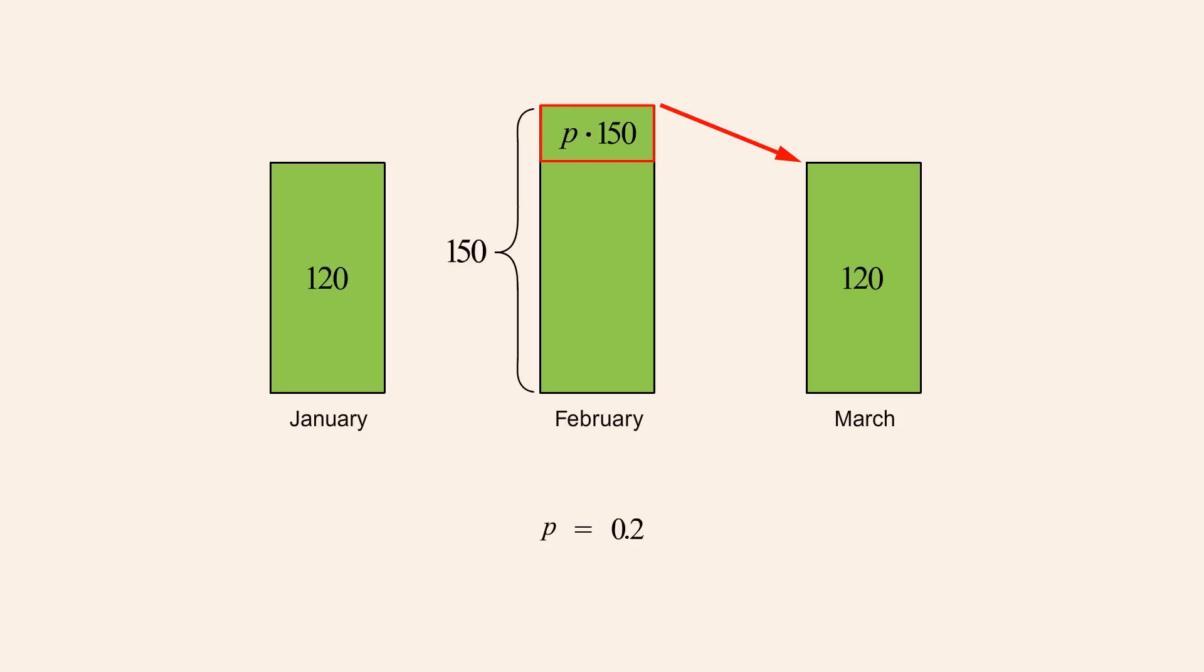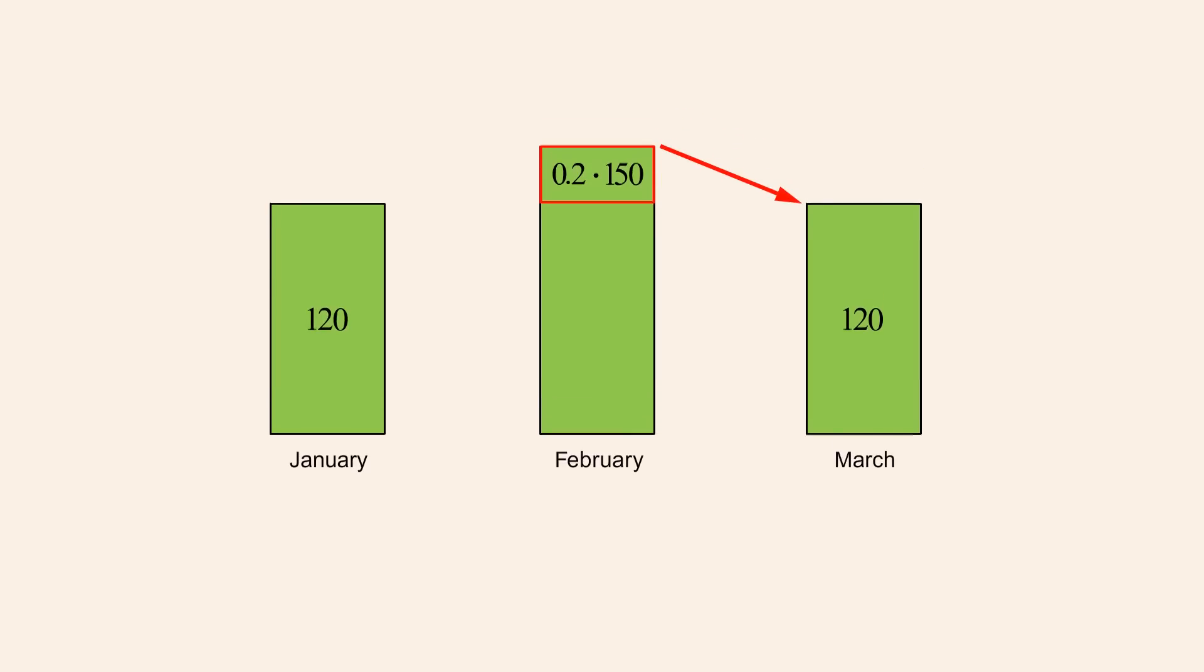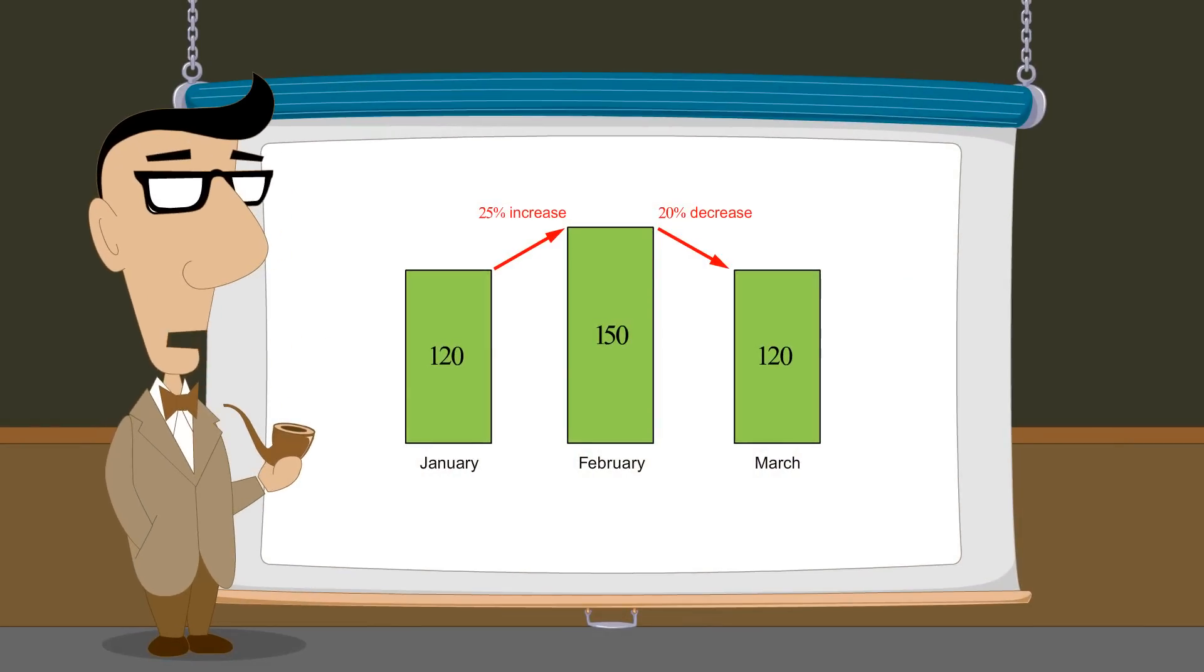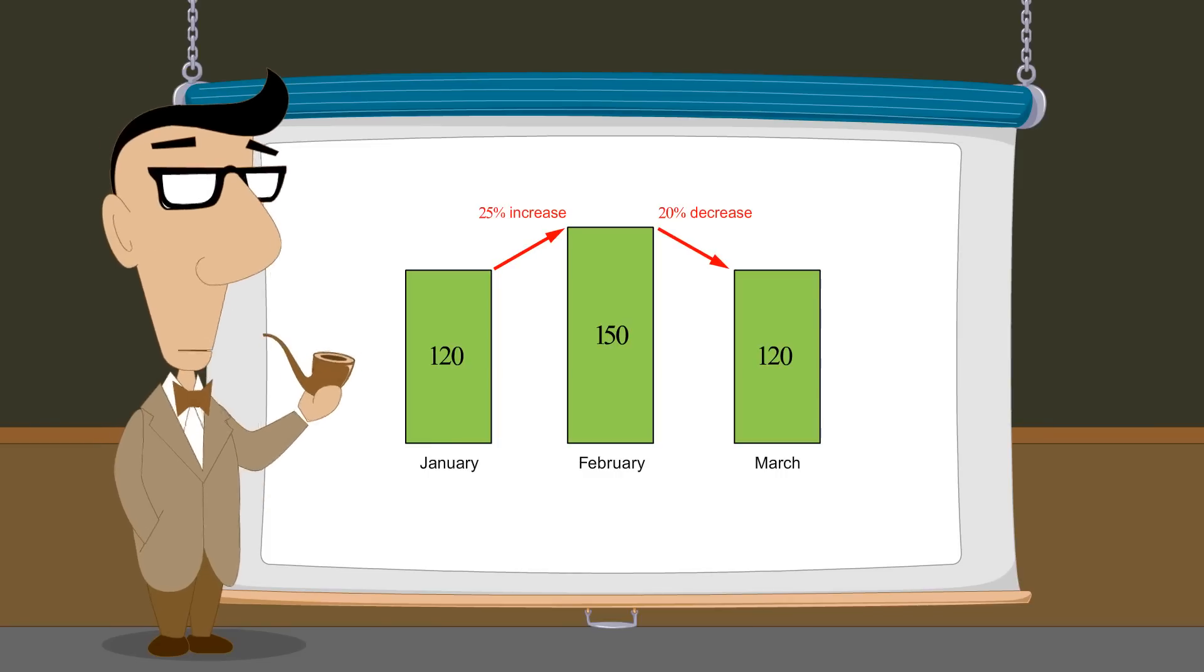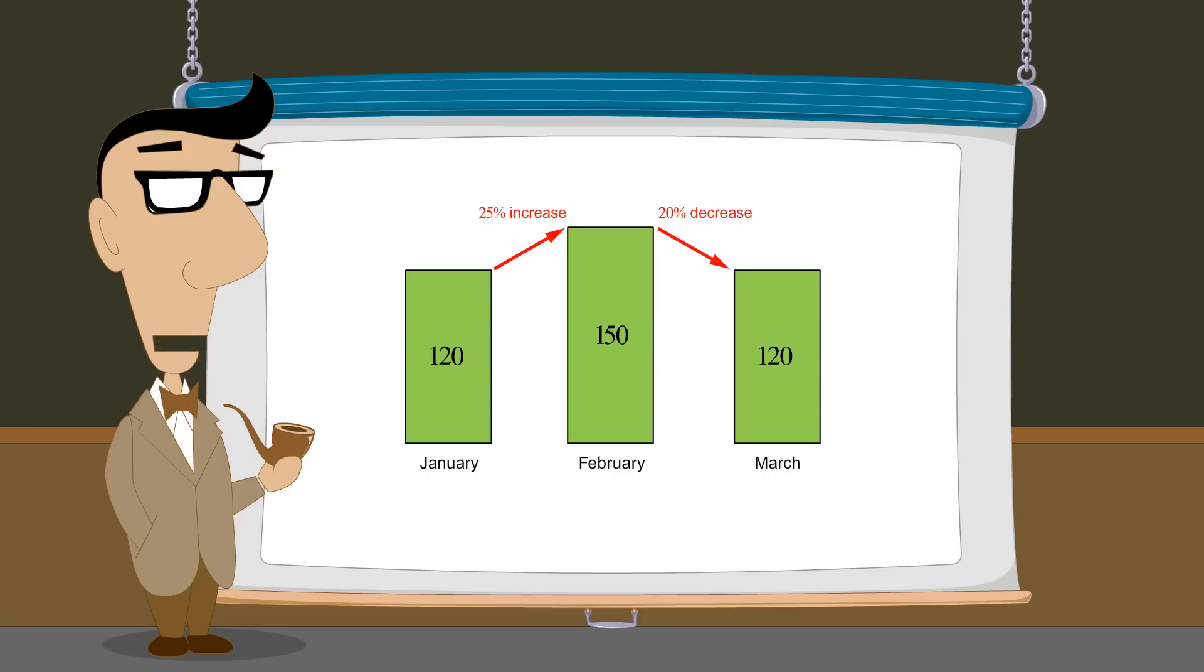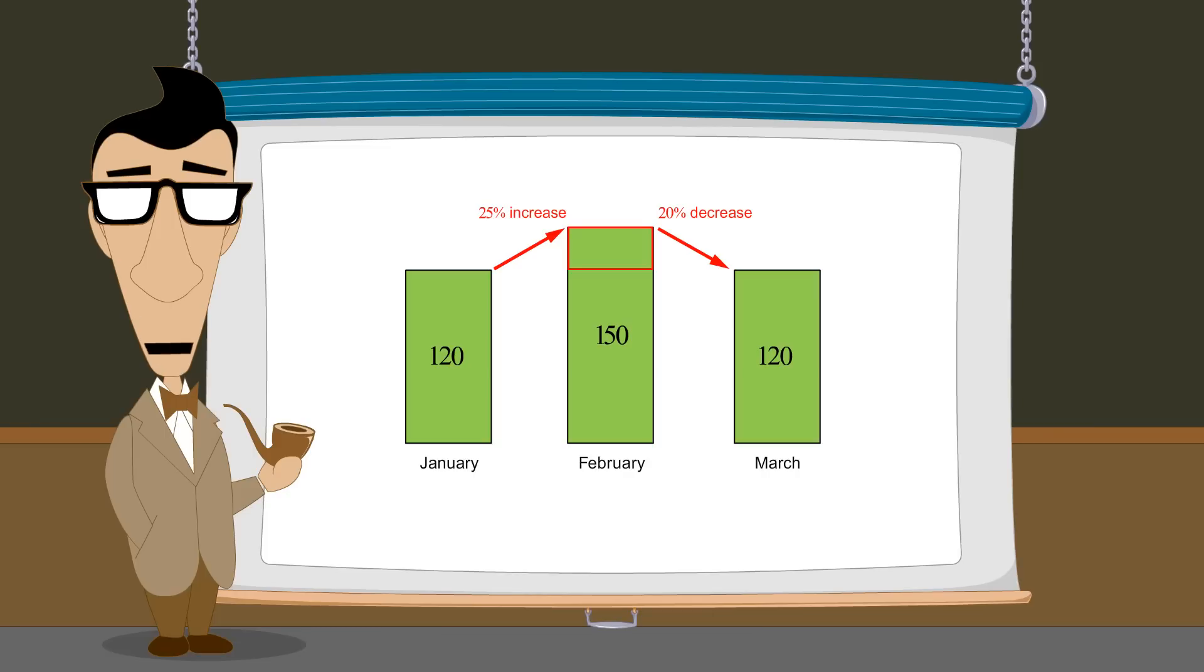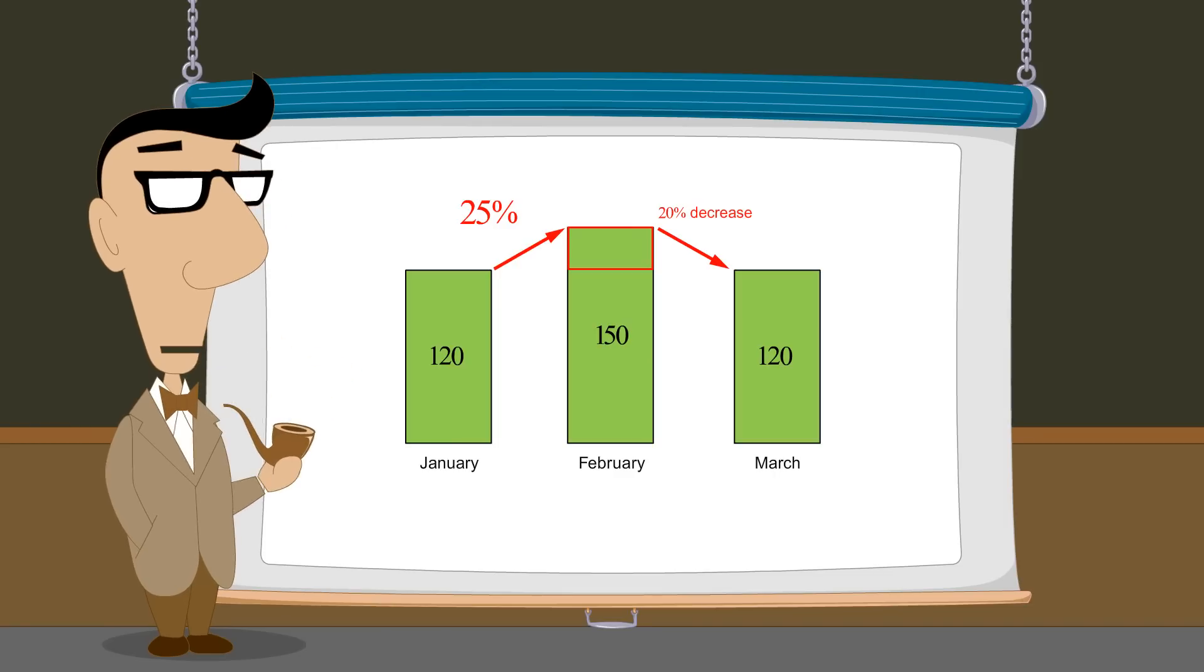So the decrease in accidents from February to March is 0.2 times 150. Since 0.2 is the decimal equivalent to 20%, this represents a decrease in accidents from February to March of 20%. Even though the size of the difference from January to February is the same as from February to March, this same value represents a larger percentage of 120 than it does of 150. Therefore, this same quantity represents a 25% increase from January, but only a 20% decrease from February.